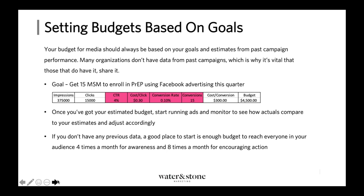If you don't have any previous data at all, it's helpful to think about how big your target audience is and how many times you want to reach them. You can look at the geographic area, take 48% of it and allocate that to men, and then take 5% of that as an estimated MSM population. If there are 100,000 MSM in your area that you can possibly reach and you want to hit them all four times, you need 400,000 impressions — and you can work back to a cost from there.